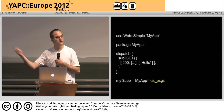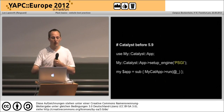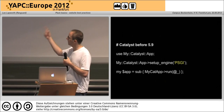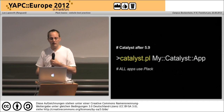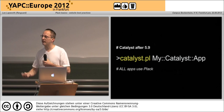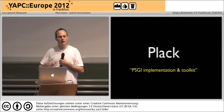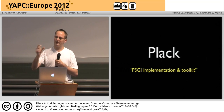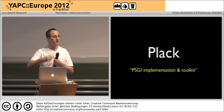HTTP::Server::Simple::PSGI, Catalyst — if you're using an old Catalyst before 5.9 you just call setup_engine and pass it PSGI, but if you're using anything after 5.9 it is the default. All Catalyst apps return a PSGI application.